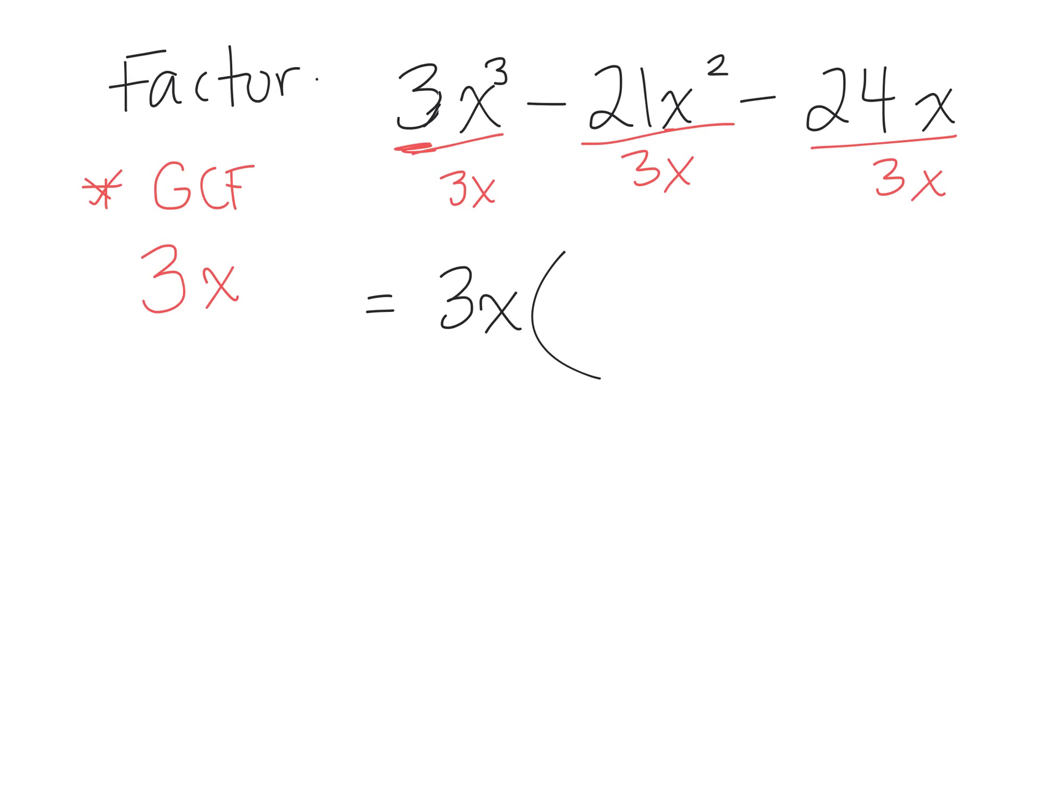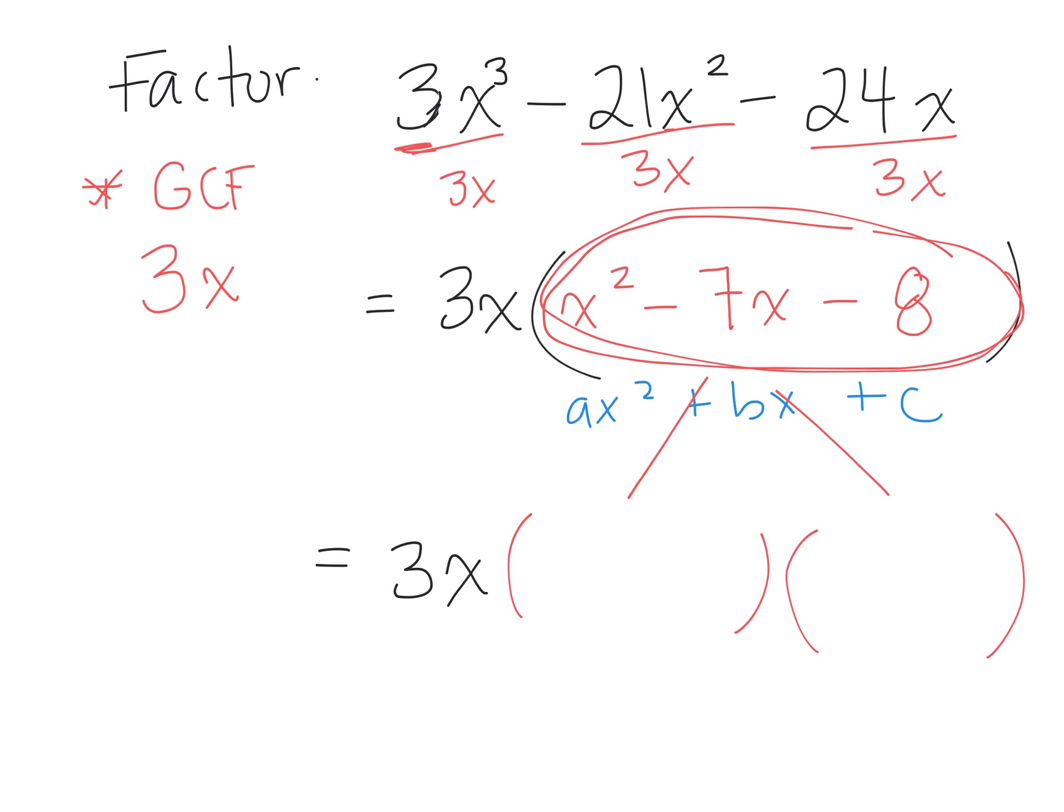So the greatest common factor is 3x, which means I can divide everything by 3x. So if I can divide it by 3x, I can multiply it by 3x. So tell me what you get in factored form. x squared. Second term. Negative 7x. And third term. Minus 8. So we factored this using greatest common factor, but what do you notice about the second factor? What form is it in? It's in the form ax squared plus bx plus c. So we actually have to factor this again. So my answer is going to be 3x bracket whatever this is factored.